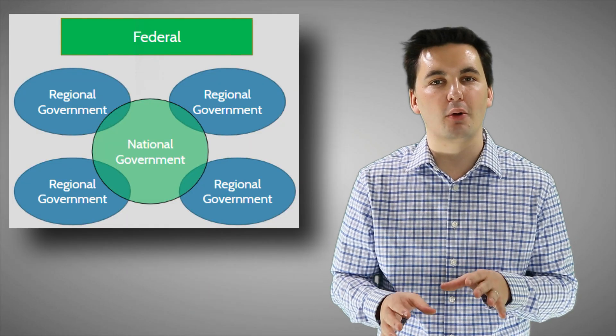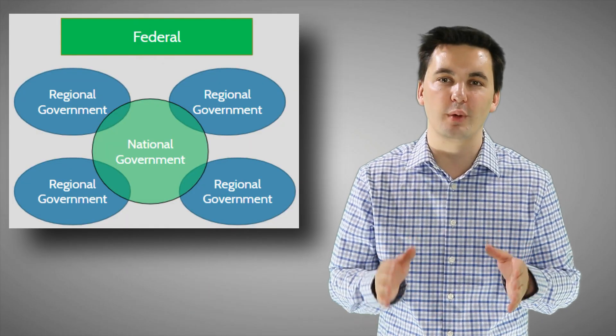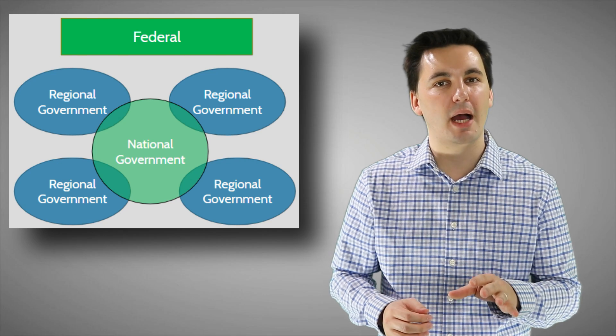Now while unitary states focus all their power on the national level, we can also see states that have decided to share that power between the regional governments and the national government. These states are known as federal states, and here power is shared between the national government and regional governments. And there are some powers that overlap.